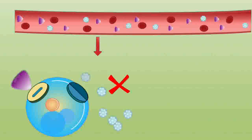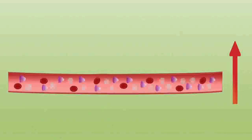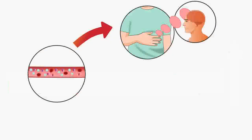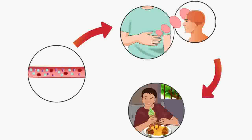Excess sugar gets stored as fat in the body. Regular eating of high sugar food can cause insulin resistance. During insulin resistance, the body is unable to respond to insulin or use it. Therefore, sugar is not taken up by our cells from the blood. As a result, there is a rise in insulin levels and blood sugar levels. The high insulin levels send signals for hunger to the brain, and the body starts craving more food even if it is not hungry. This creates a vicious cycle and causes overeating.